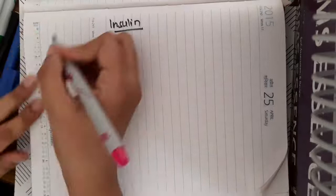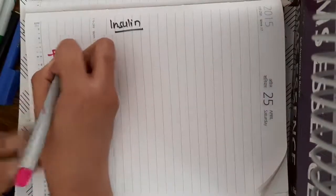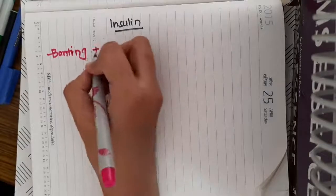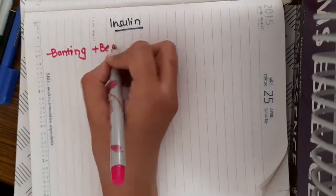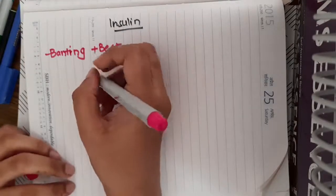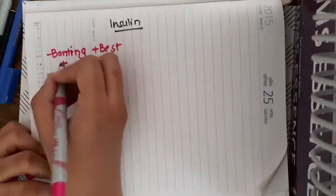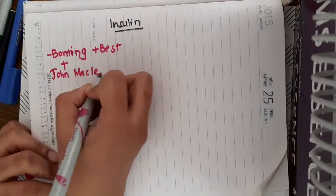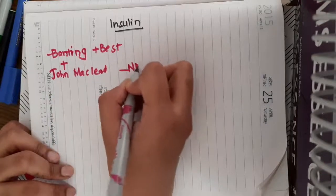This insulin is extracted by a group of scientists, two doctors, Banting and Best. For this insulin structure, Banting along with John McLeod has received the Nobel Prize.